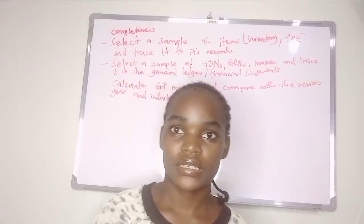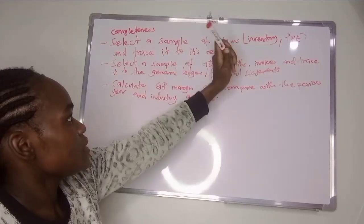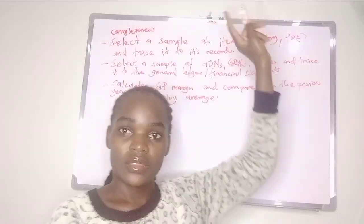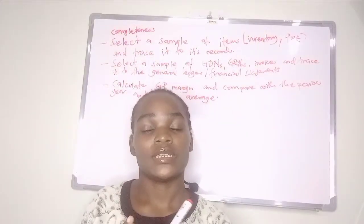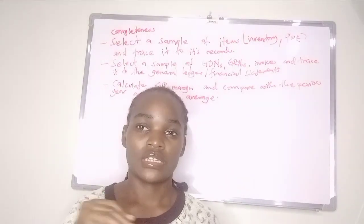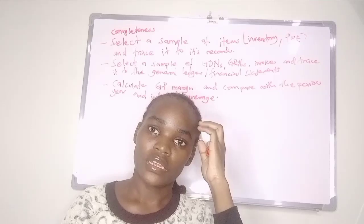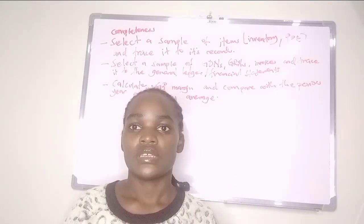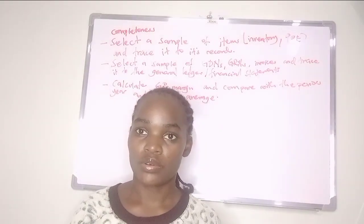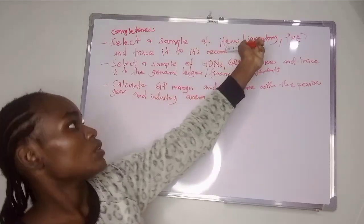The first substantive procedure for completeness is: select a sample of items and then trace it to the records to see if they are matching. This can work for inventory and property, plant and equipment, because for these items they have to physically be there. You select a sample of inventory in the store and trace it to the supporting records to see if all of it was recorded — that it was complete. Or you select a sample of property, plant and equipment and trace it to the supporting records to see if they recorded all of it.